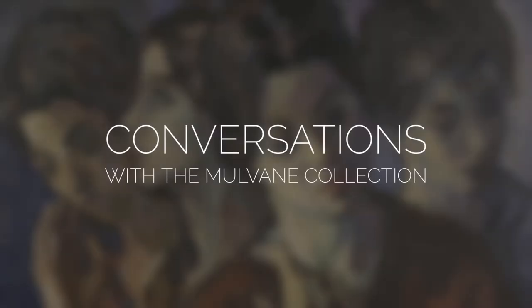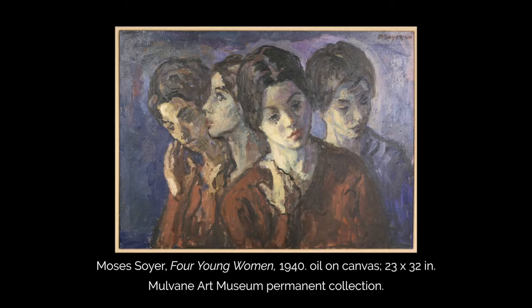This is Conversations with the Mulvane Collection. Today we consider Moses Sawyer's oil-on-canvas painting Four Young Women, painted in 1940. Renowned Kansas art collectors Lewis and Retta Soslin donated the work to the Mulvane Art Museum in 1969.